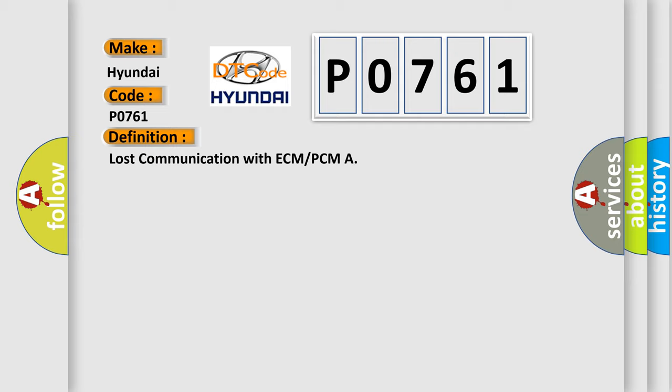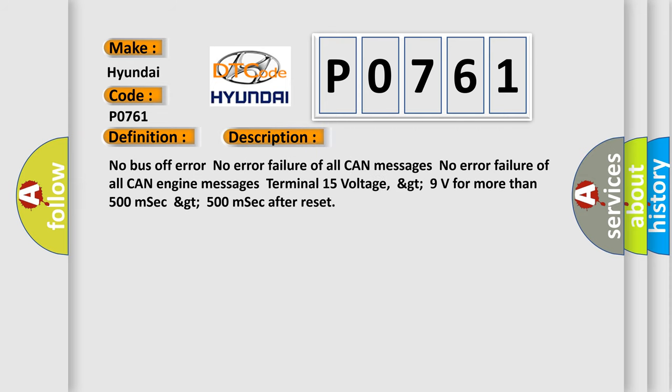The basic definition is Lost communication with ECM or PCM. And now this is a short description of this DTC code: No bus off error, No error failure of all CAN messages, No error failure of all CAN engine messages, Terminal 15 voltage greater than 9 volts for more than 500 milliseconds, greater than 500 milliseconds after reset.